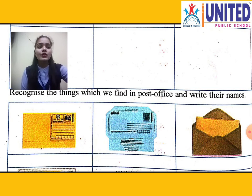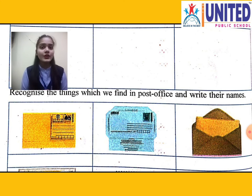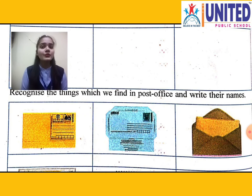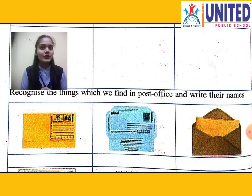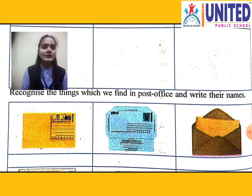Look at the first picture — this is known as a post card. This is the picture of a post card that we get from the post office, and its color is yellow. Now look at the second picture — this is the picture of an inland letter. Both post card and inland letter are things we get from the post office and they already have stamps on them.